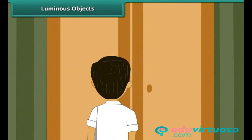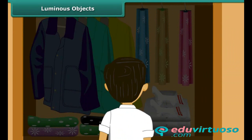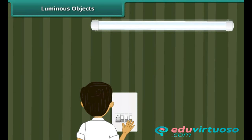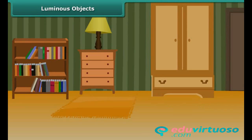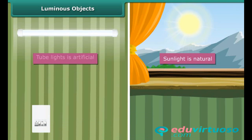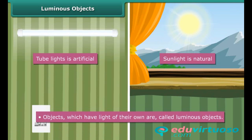You are not able to find your socks, so you search for them in the cupboard. Since the cupboard is dark, you switch the tube lights on. Once you locate the socks, you switch the lights off because there is sufficient daylight. We just talked about two types of light: the light from tube lights and daylight, which is light from the sun. Objects which have light of their own are called luminous objects. Both the sun and tube lights are luminous objects — the sun is a natural luminous object and tube lights are artificial man-made luminous objects.